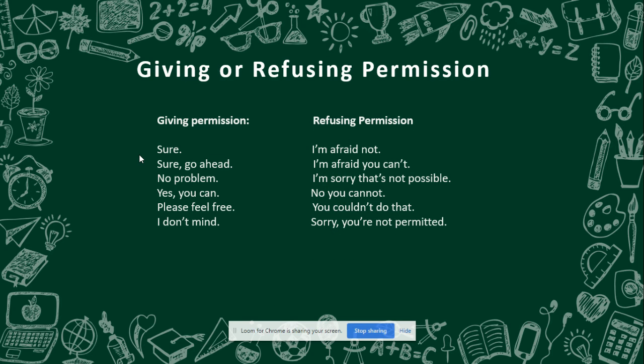Next we have giving or refusing permission — memberikan ataupun tidak memberikan persetujuan. For giving permission you can say: 'Sure.', 'Sure, go ahead.', 'No problem.', 'Yes, you can.', 'Please, feel free.', or 'I don't mind.'